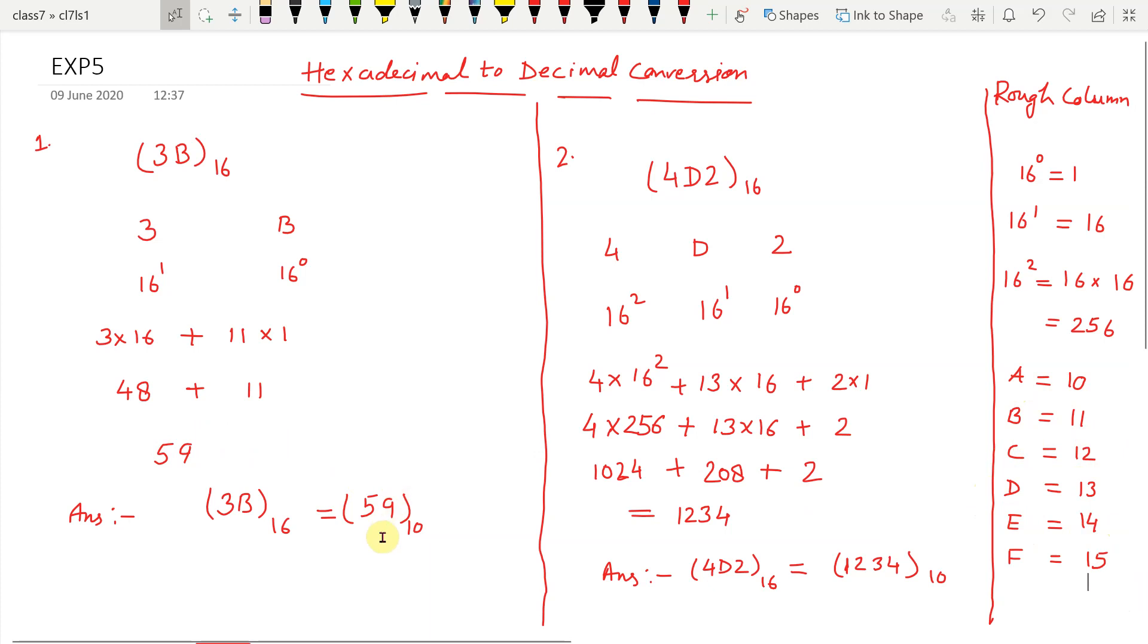Simplify it and you will get the result 59. So, 59 is the decimal value equivalent to hexadecimal number 3B.